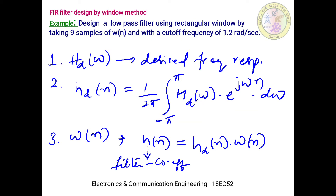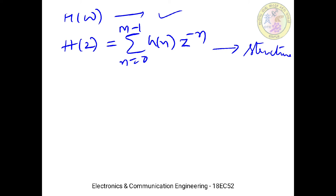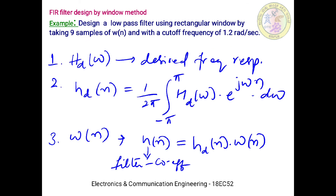To summarize the steps: first, use the desired frequency response HD(ω); second, find its inverse Fourier transform HD(n); third, obtain H(n) — the filter coefficients — by multiplying HD(n) with the window function W(n). Then we can find the magnitude response and H(z) to realize the filter. For this problem, we need to design a low pass filter with a rectangular window, 9 samples, and cutoff frequency 1.2 radians per second.